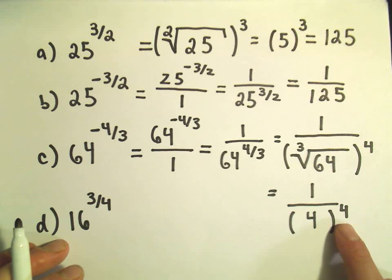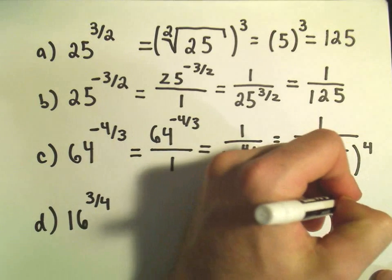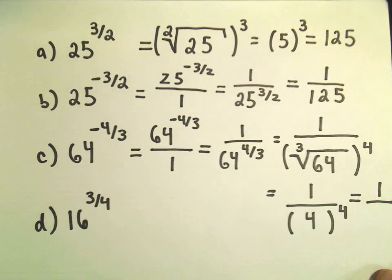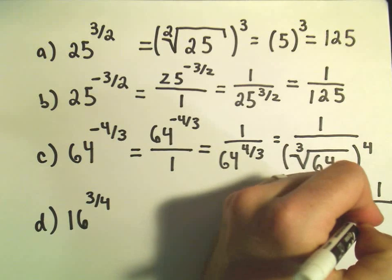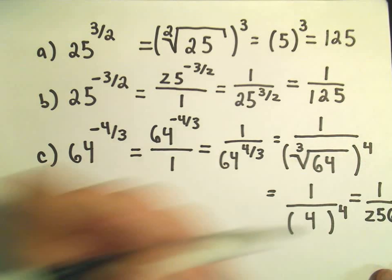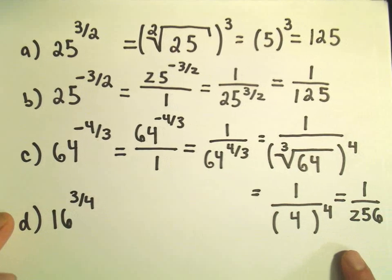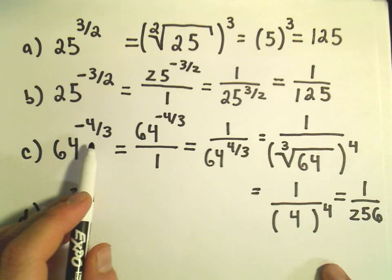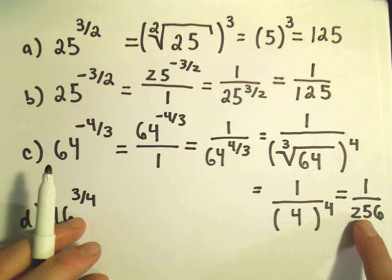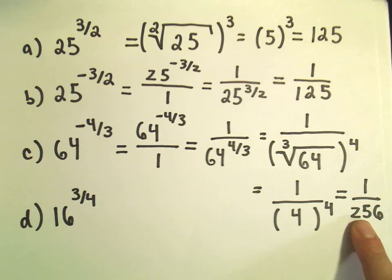And again, now we have to evaluate four to the fourth. So you can either always do it by hand or with a calculator. I believe four to the fourth would be 256. So 64 to the negative four-thirds would simplify down to the number one over 256.